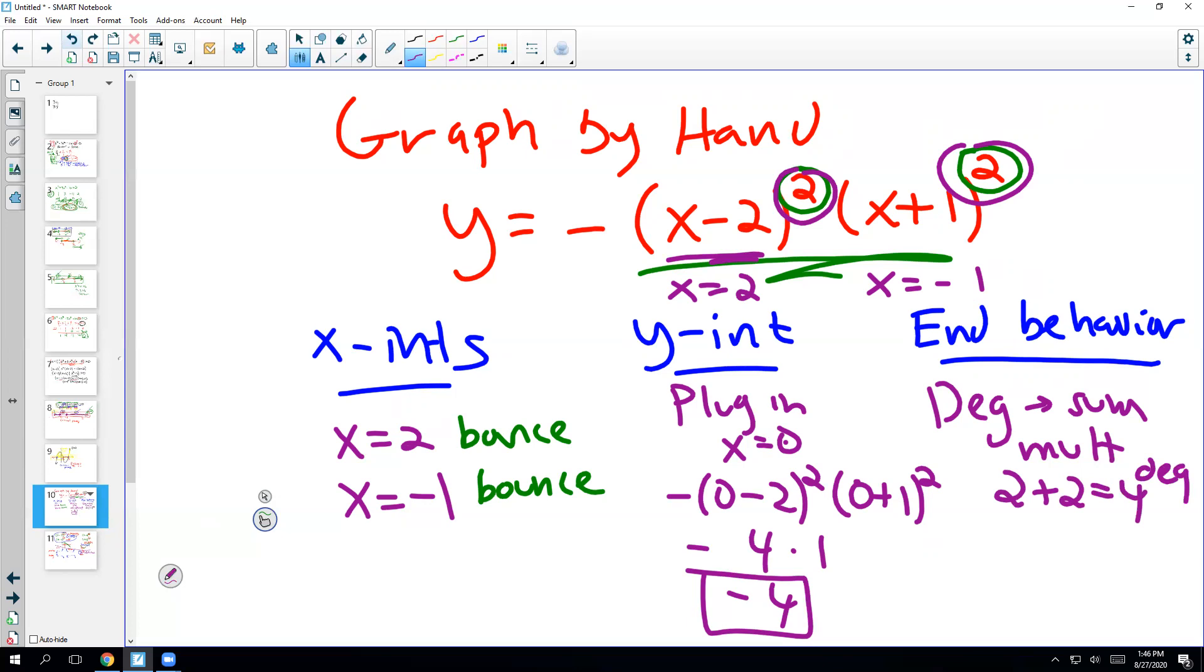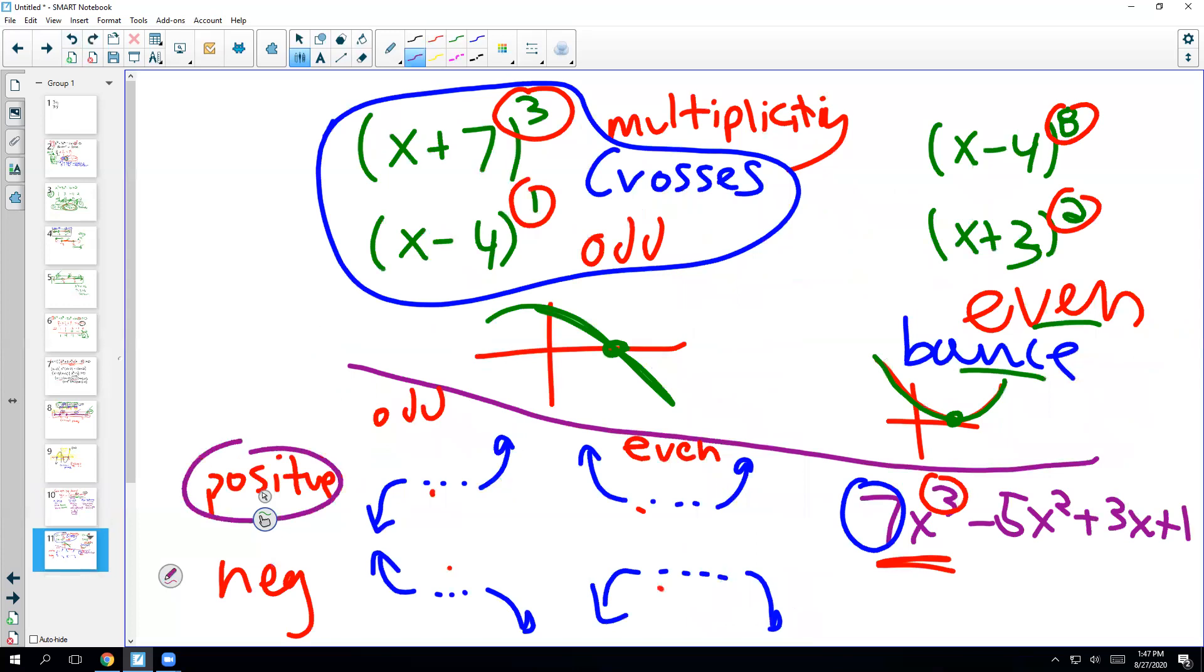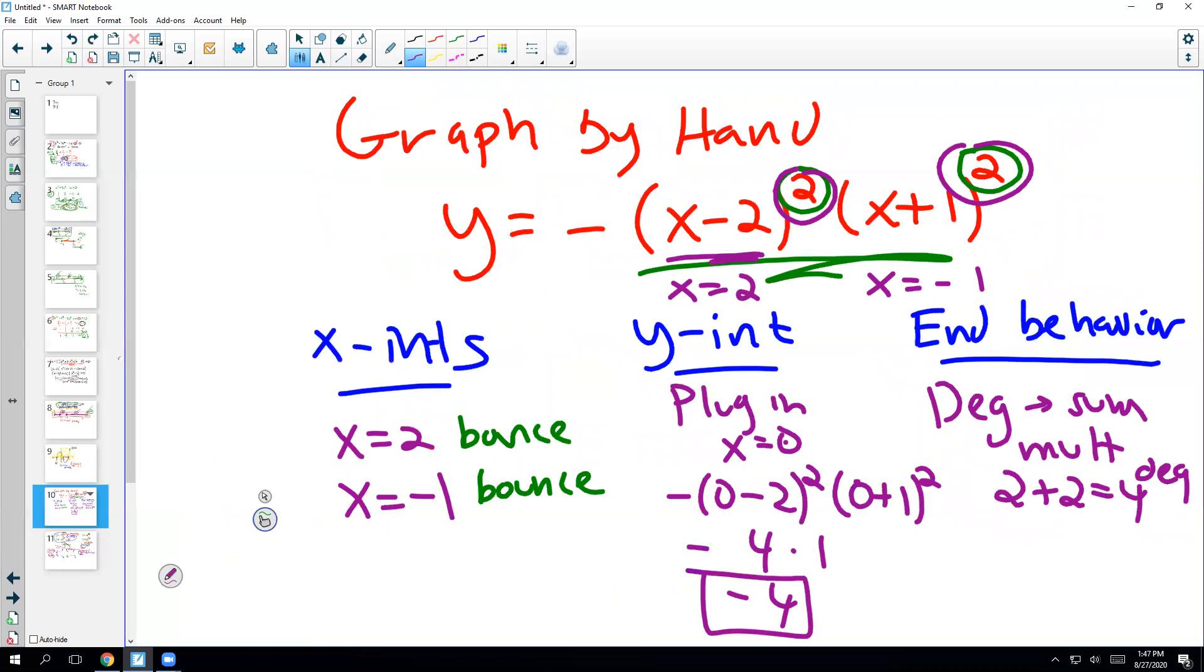The leading coefficient, basically, assuming it's factored correctly, we only care that the leading coefficient is positive or negative. So in our chart, that's what this means. We just need to know if it's positive or negative. So if it's factored correctly, basically, it's just this number out front. Which is, in this case, like a negative 1. In this case, it's negative.